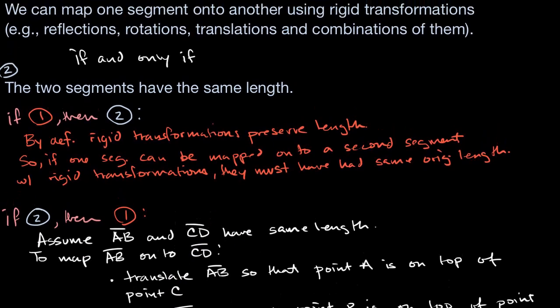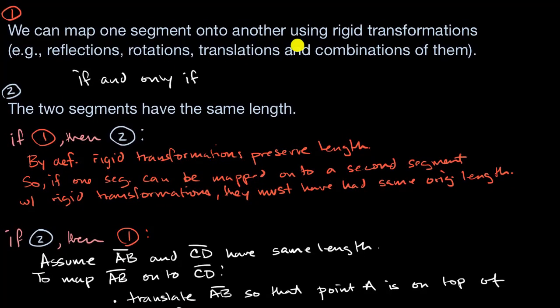So I've just shown you, if we can map one segment onto another using rigid transformations, then we know they have the same length. And if two segments have the same length, then we know that we can map one segment onto the other using rigid transformations.